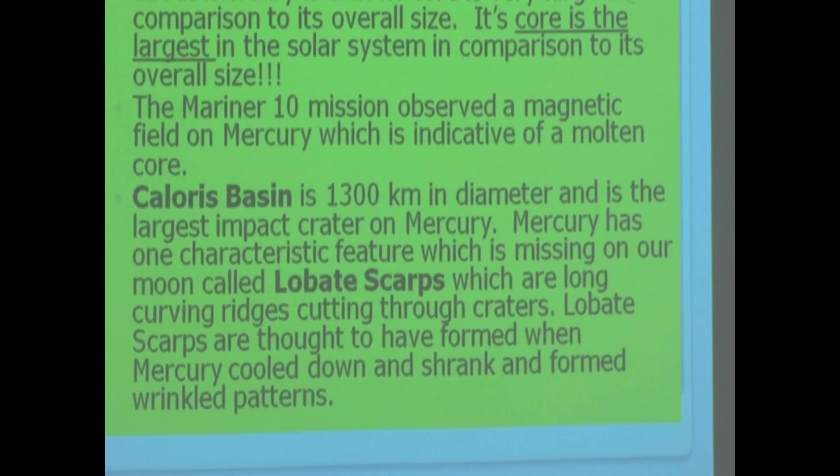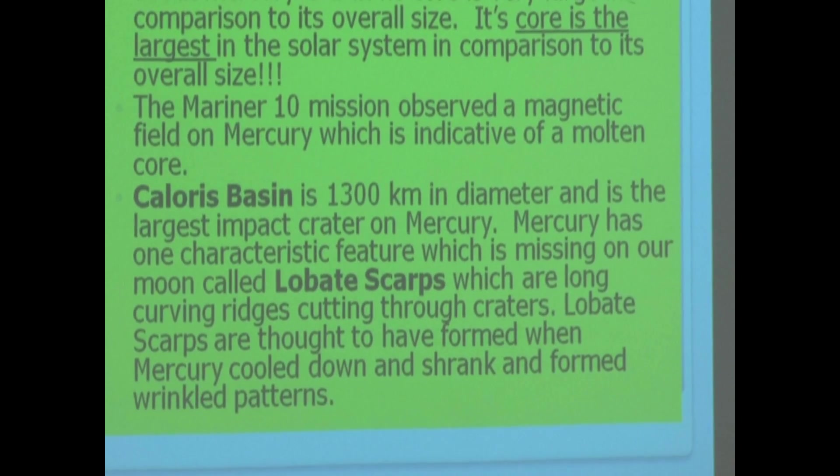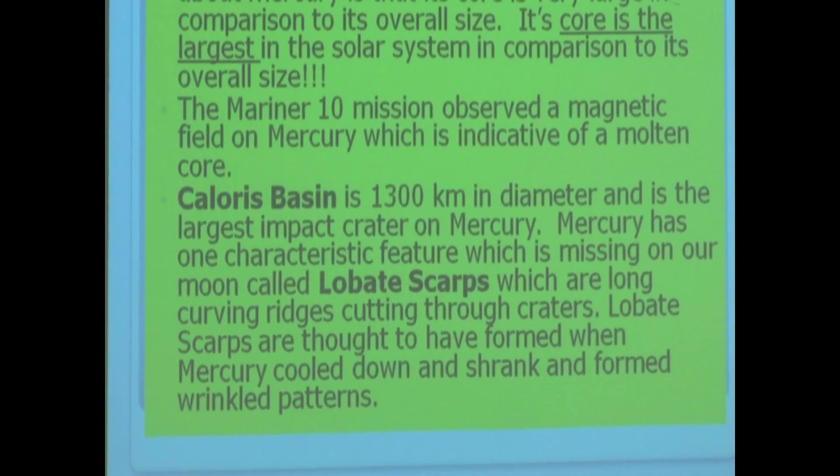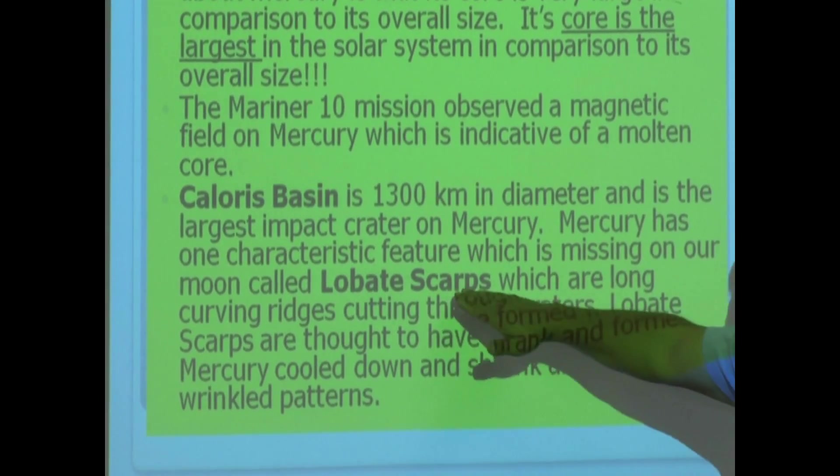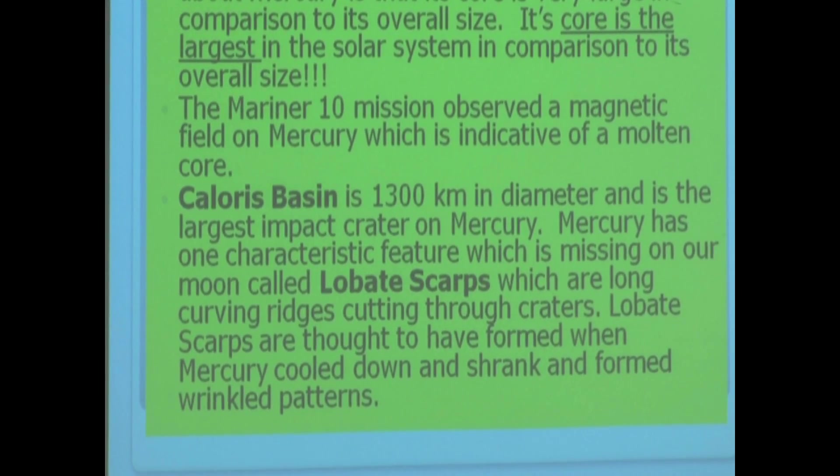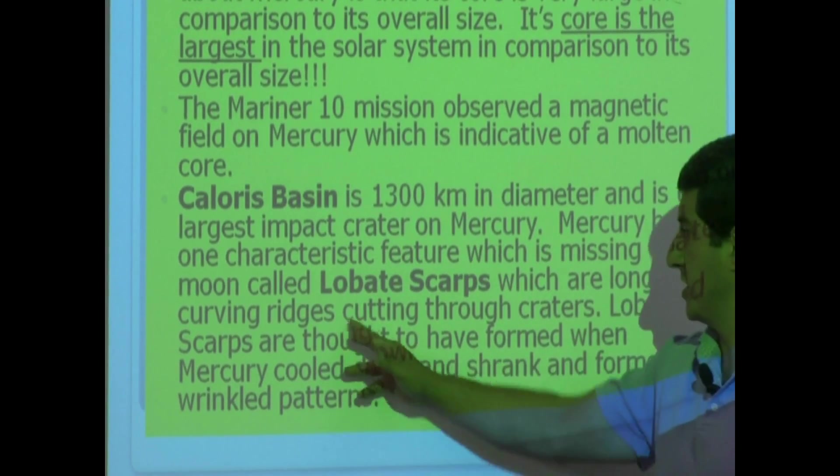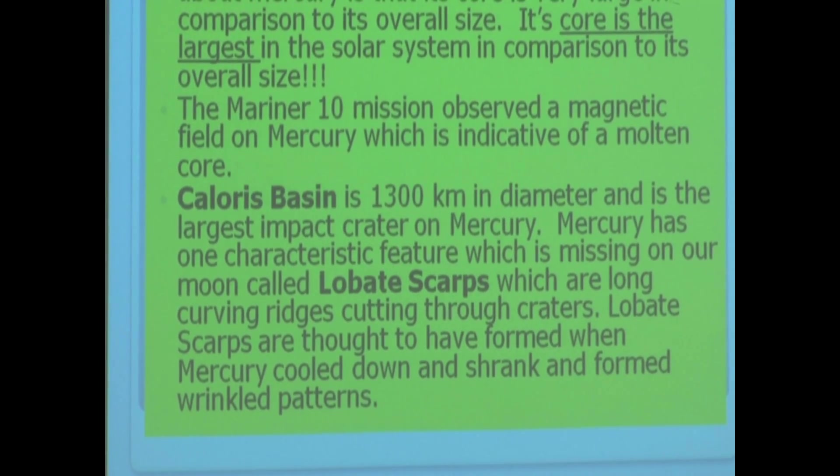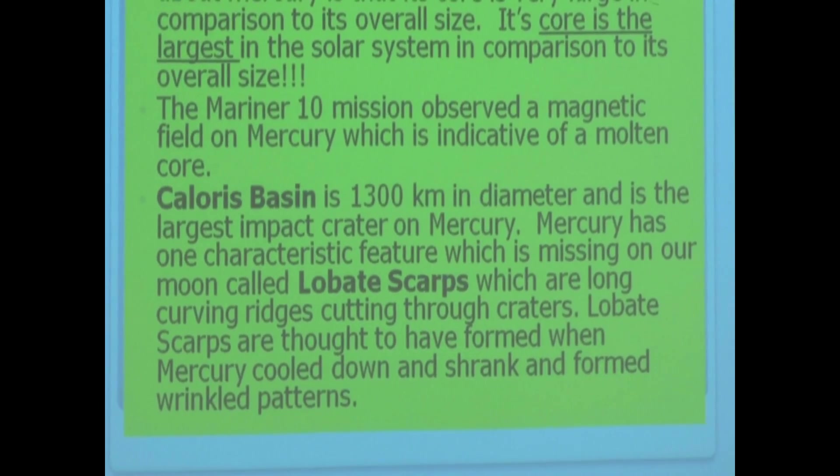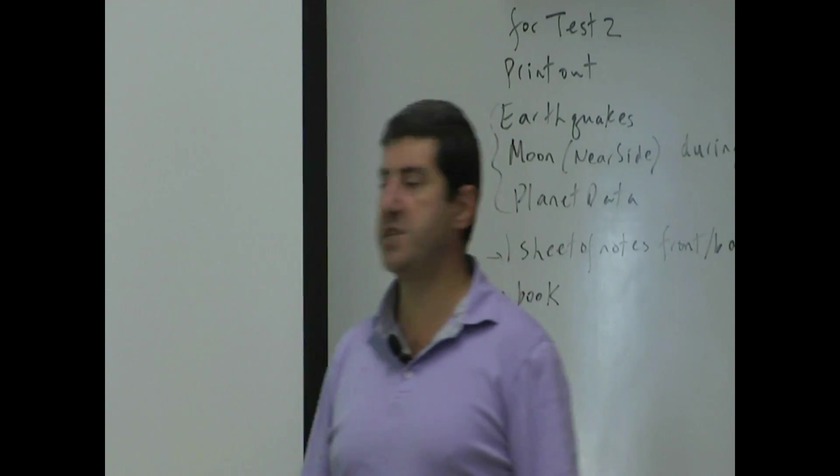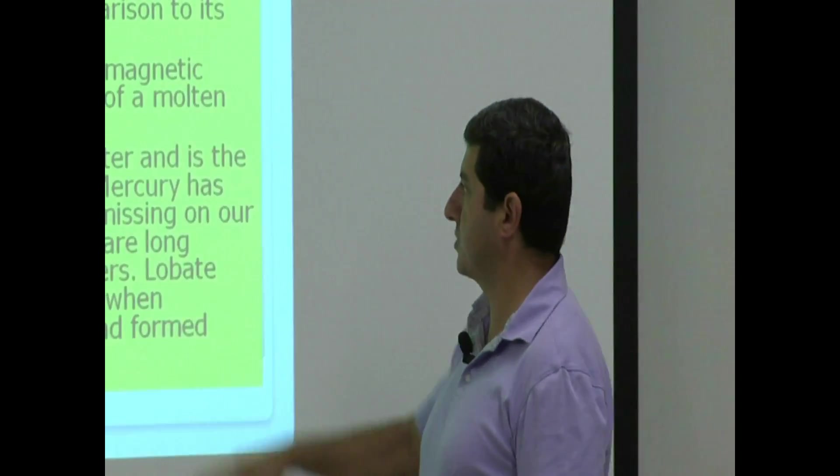Mercury has one characteristic feature which is missing on our Moon. Mercury and the Moon are more or less the same, except that Mercury has this feature called lobate scarps, which are long curving ridges cutting through craters. Lobate scarps are thought to have formed when Mercury cooled down and shrank, forming wrinkled patterns and cracks.